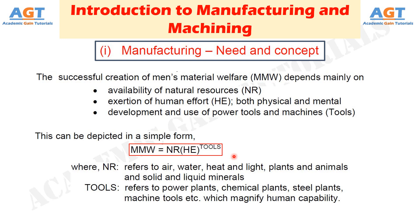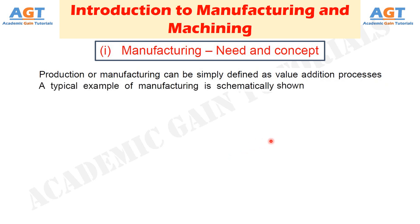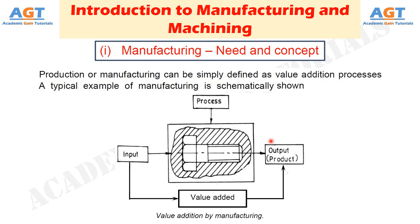Production or manufacturing can be simply defined as value addition processes by which raw materials of low utility and value, due to inadequate material properties and poor or irregular size, shape and finish, are converted into high utility and valued products with definite dimensions, forms and finish imparting some functional ability. A typical example is schematically shown in a figure illustrating value addition by manufacturing, where a lump of mild steel of irregular shape, dimensions and surface has been converted into a useful product like a bolt, with suitable features, dimensional accuracy and surface finish required for fulfilling functional requirements.